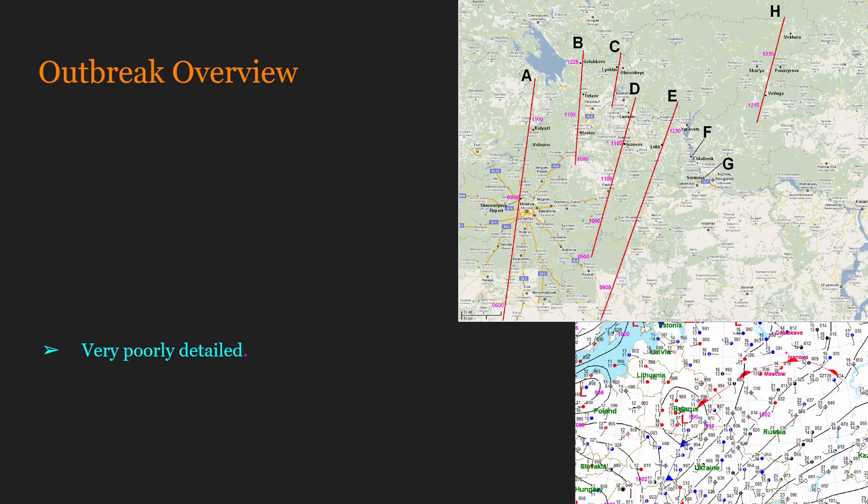This is the 1984 Soviet Union tornado outbreak of June 9th, 1984. Before I go into any details, this event is pretty poorly documented. I found a paper about this and that is really my only source for this video unfortunately. If this was a 1980s United States event that still had an F5 and an F4, I would absolutely make a video on it. Unlike this one, this is actually a very prolific event, especially for the fact that it happened in Russia.